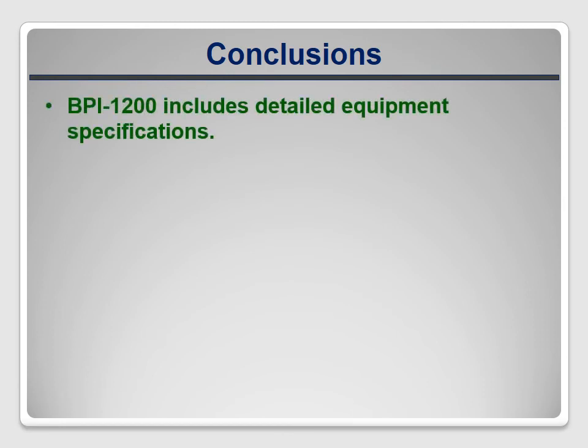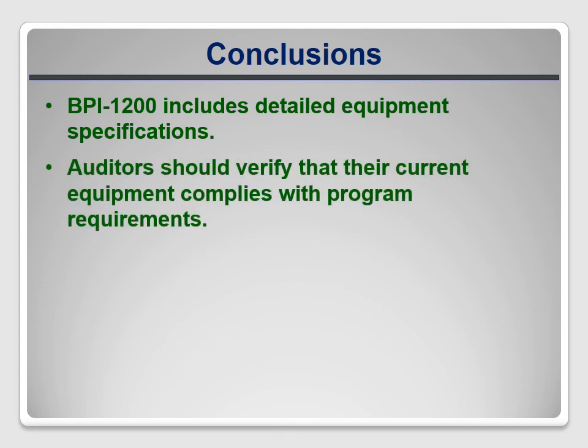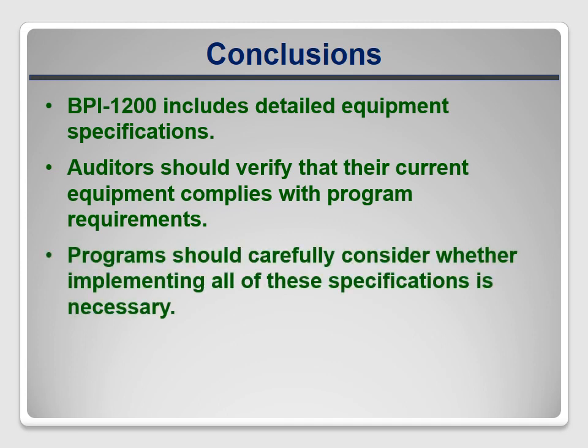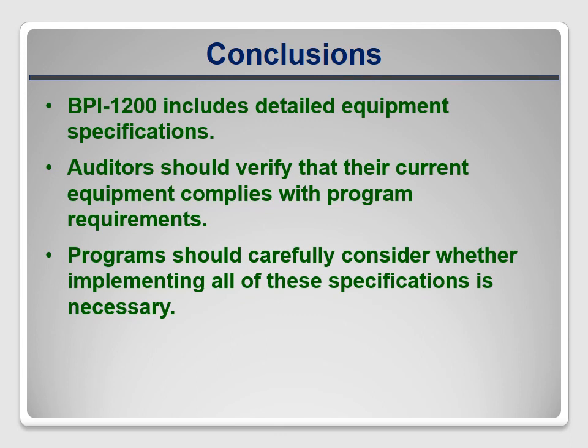Based on this review, BPI 1200 includes detailed minimum specifications for diagnostic equipment, which can be very useful for auditors who are acquiring new tools. However, these requirements are fairly stringent and much of the equipment currently in use in the industry does not comply with them. If you're an auditor, review your program requirements carefully to see if they've adopted these specifications — if so, you may need to upgrade some equipment. If you're a program manager, think carefully before adopting these requirements, because they may force your contractors to abandon existing equipment and spend a substantial sum on upgrades.